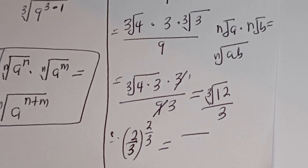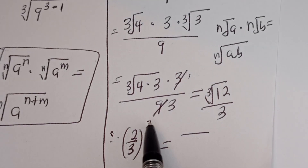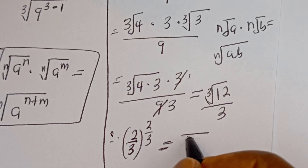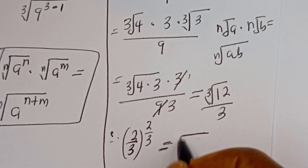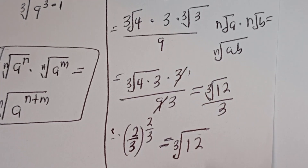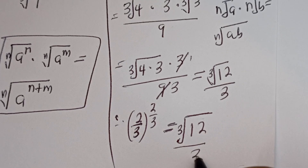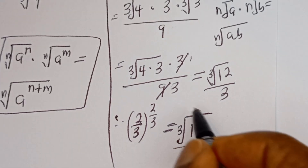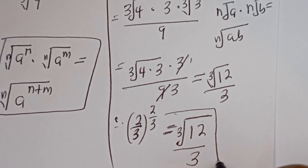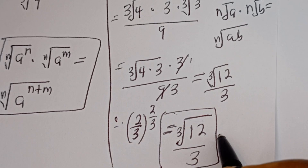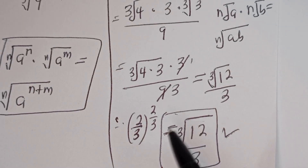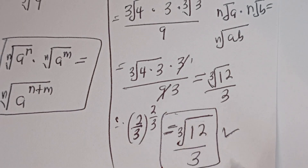Therefore, 2 divided by 3, to the power of 2 divided by 3, is equal to the cube root of 12 divided by 3. And this is the final answer. I hope you enjoyed the video — thank you for watching. Please don't forget to like, share, comment, and subscribe to my channel. Bye!